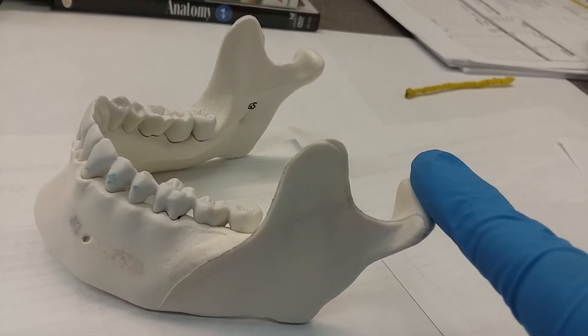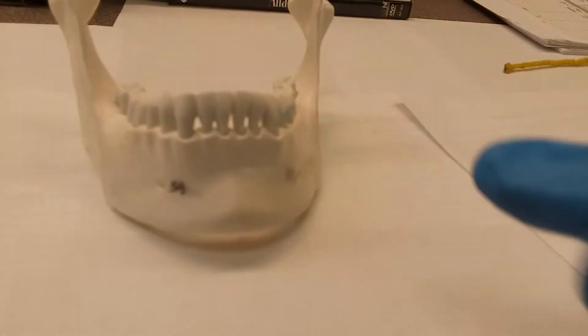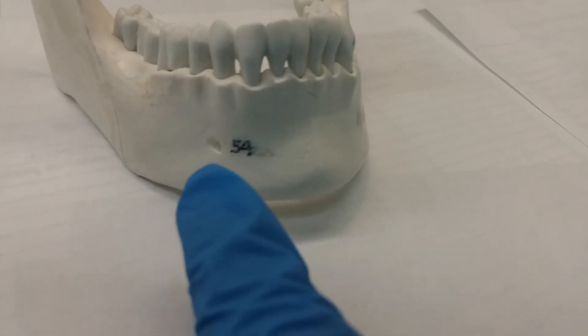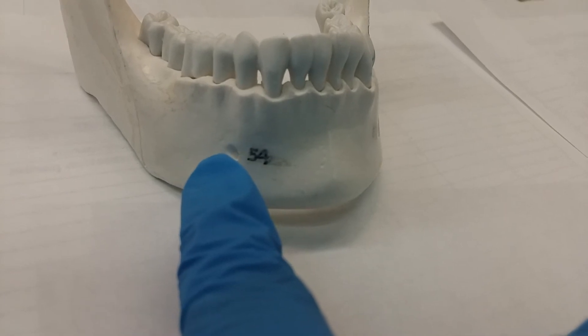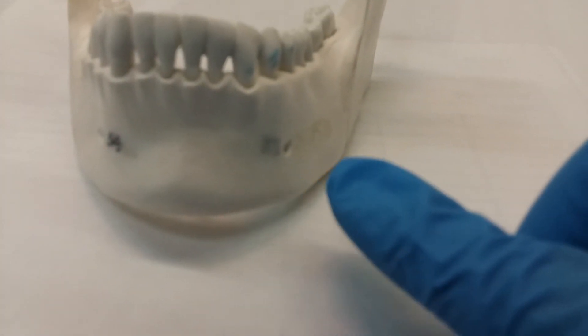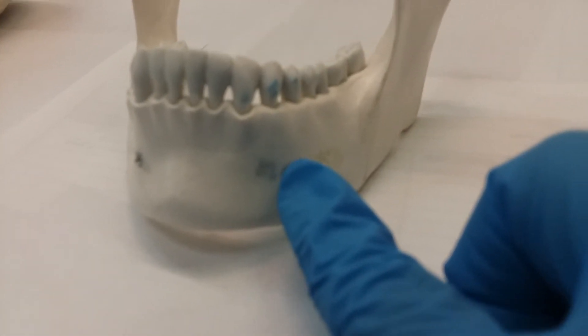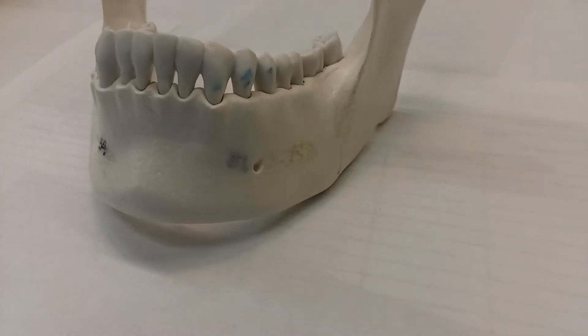Next we're going to go to the mental foramen. We're going to rotate the jaw forward. The mental foramen is going to be these little holes. You got two. This one's mirrored as well, and the second one right here. Let's get that to zoom in a little prettier.